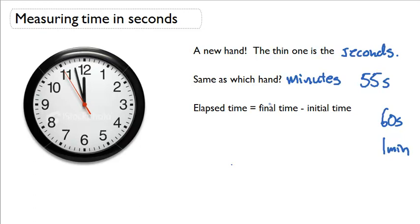But how do we calculate elapsed time now that we have seconds? Well, it's pretty much the same thing as what we've done before. We use the same equation: elapsed time equals final time minus the initial time. So, for example...